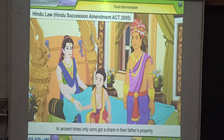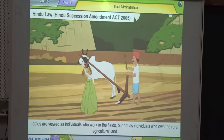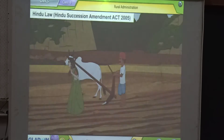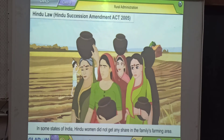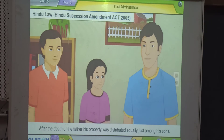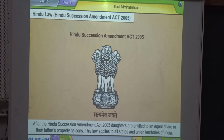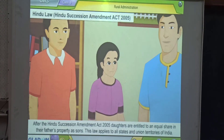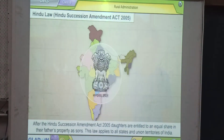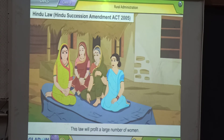In ancient times, only sons got a share in their father's property. Women were viewed as individuals who worked in the fields but not as individuals who owned rural agricultural land. In some states of India, Hindu women did not get any share in the family's farming area. After the death of the father, his property was distributed equally just among his sons. After the Hindu Succession Amendment Act 2005, daughters are entitled to an equal share in their father's property as sons. This law applies to all states and union territories of India and will benefit a large number of women.